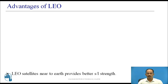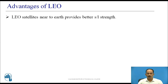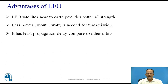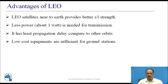Advantages of LEO: LEO satellites are near to earth and provide better signal strength. Since LEO satellites are closer to earth, communication between satellite and ground station will have better signal strength. Less power is needed for transmission — only about 1 watt of power is sufficient. LEO has the least propagation delay compared to other orbits. The signal transmission delay is very less, and low cost equipment is sufficient for ground stations.